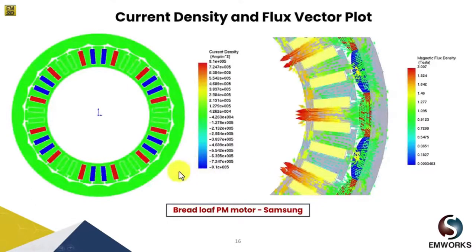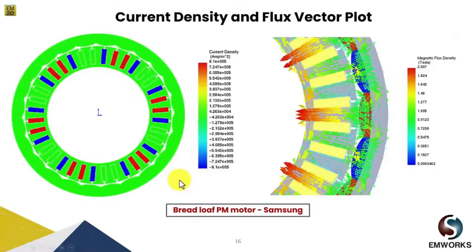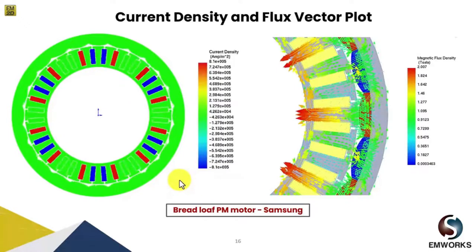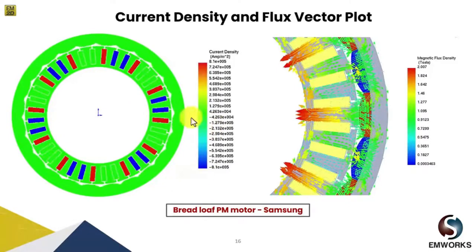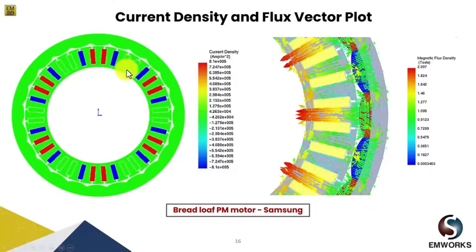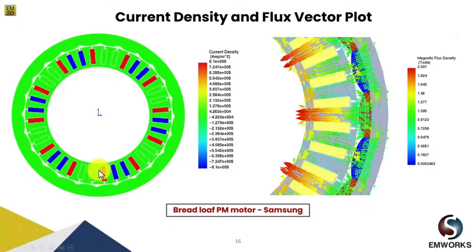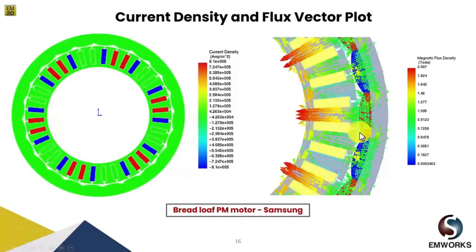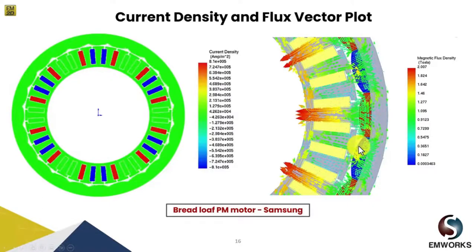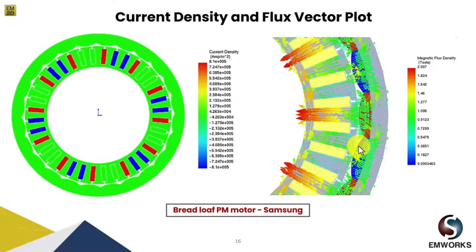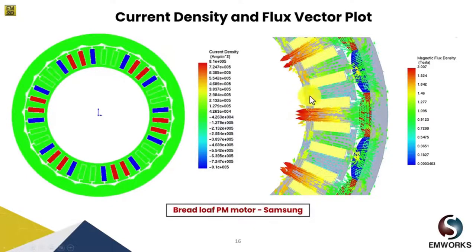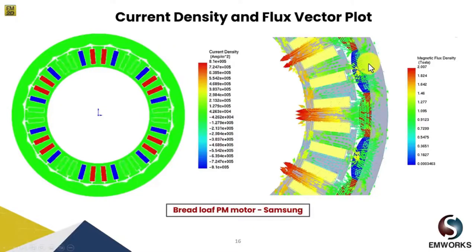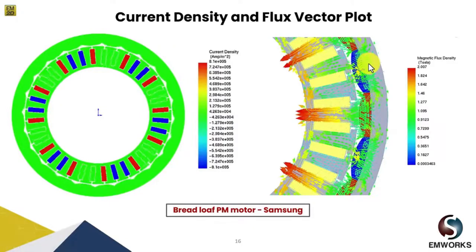Using EMWorks 2D software, you can also obtain the current density plot of your design. Here on the left hand side, the coils are excited by 10 amperes and you can see the current density in the slots. Also, to understand its flux pattern, you can view it in the settings and look at its flux vector plot to understand the direction of flux flowing and the interaction between the stator and rotor core.